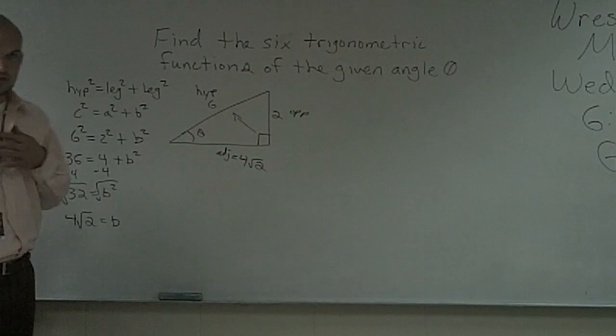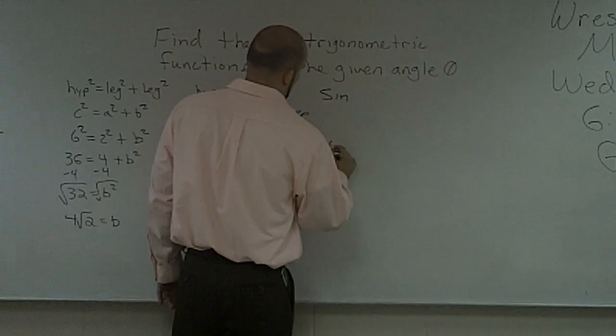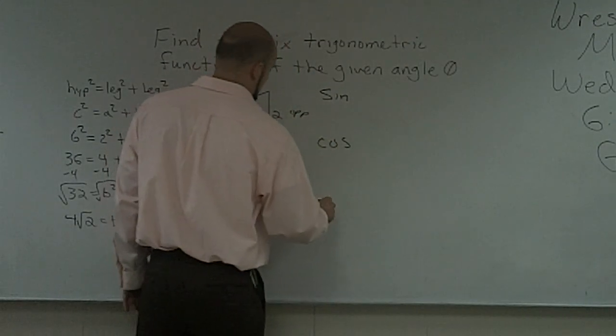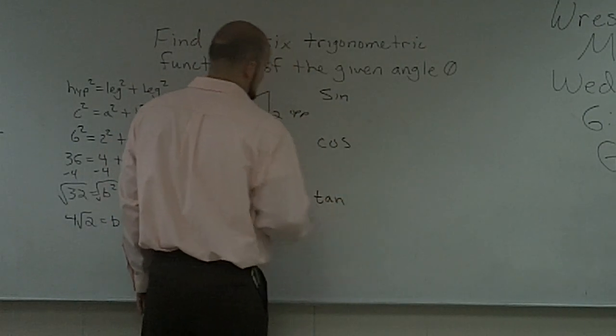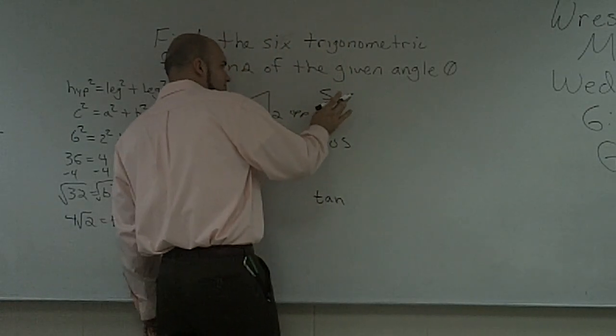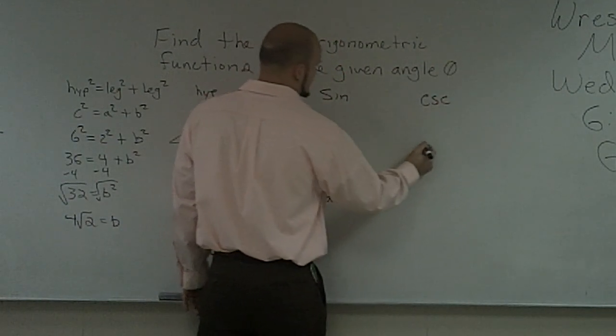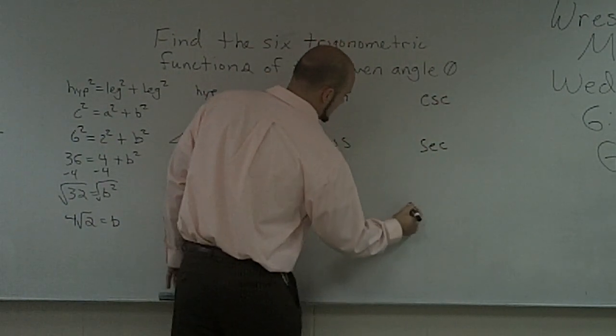Now what it says is to find the 6 trigonometric functions. So we know the 6 trigonometric functions are sine, cosine, and tangent. And then the inverse of my sine is going to be cosecant, secant, and cotangent.